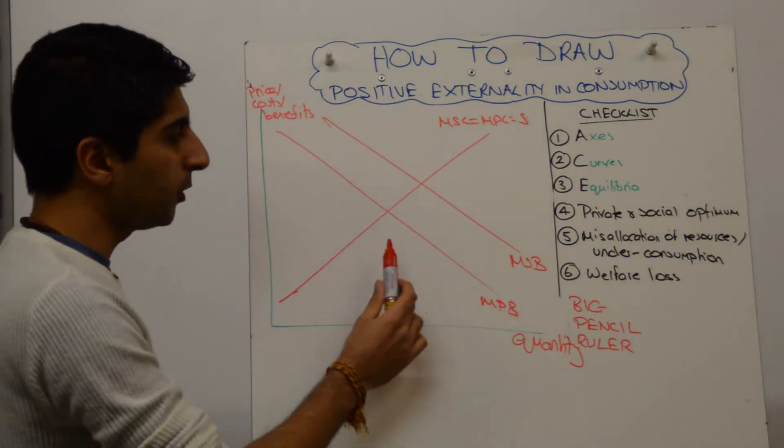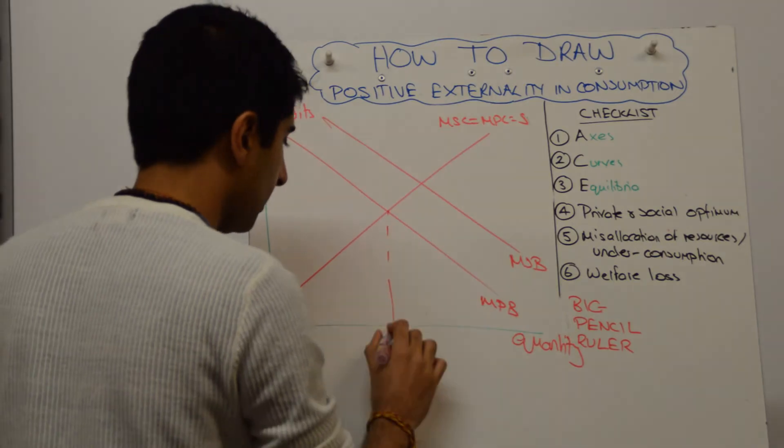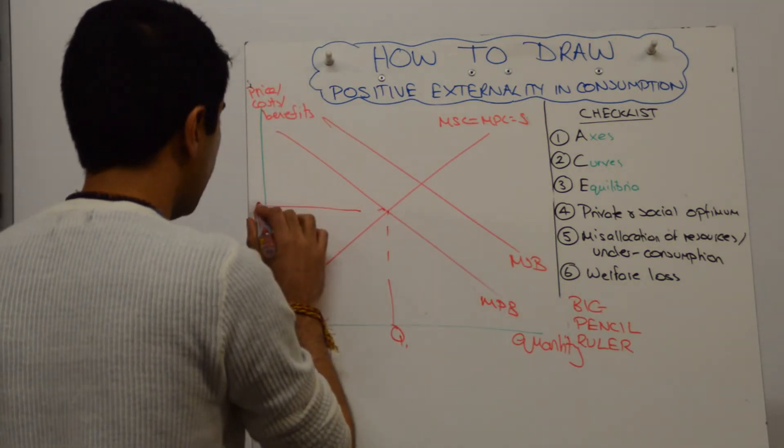Label your private optimum, which is where MPB equals MPC. That's going to be Q1 and P1.